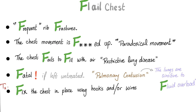Here is the mnemonic: FLAIL CHEST. F — Frequent fractures, meaning multiple fractures. L — the chest movement is effed up, it's paradoxical. A — the chest fails to fill. I — this is a restrictive lung disease, because in obstructive lung disease you cannot get the air out, but in restrictive lung disease you cannot get the air in. L — it could be fatal if left untreated because of pulmonary contusion, where the lungs are sensitive to fluid overload.